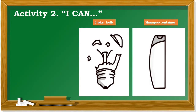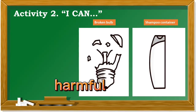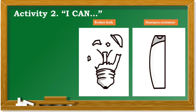Identify the following pictures whether they are useful or harmful to the environment. Number 1: Broken bulb. Is it useful or harmful? The correct answer is harmful. Number 2: Shampoo container. Is it useful or harmful? The correct answer is useful.